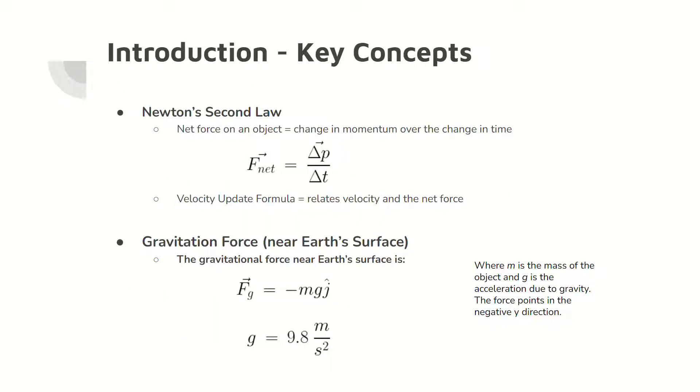The first two key concepts are Newton's second law and the gravitational force near Earth's surface. Newton's second law states that the net force on an object is equal to the change in momentum of the object over time, and this law can be described by the velocity update formula shown. The gravitational force near Earth's surface, or the weight force, is equal to the mass of the object multiplied by the gravitational constant, shown below the gravitational force equation. The gravitational force is pointing in the negative y direction.